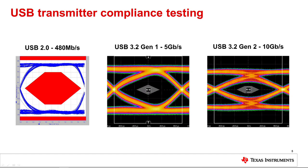The eye diagram on the left shows a passing USB 2.0 high speed eye. The eye diagram in the middle shows a passing USB 3.2 Gen 1 5 gigabits per second eye, and the eye diagram on the right shows a passing USB 3.2 Gen 2 10 gigabits per second eye. As data rates have increased to 10 gigabits per second and beyond, the requirements to pass the transmitter eye diagram testing have become more stringent. A system or device that has a USB channel with poor signal integrity is much more likely to fail this electrical compliance testing.